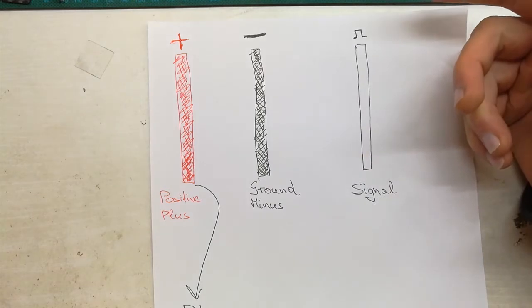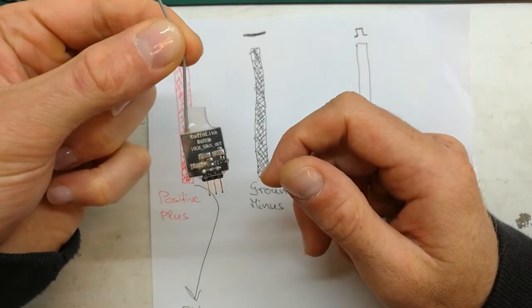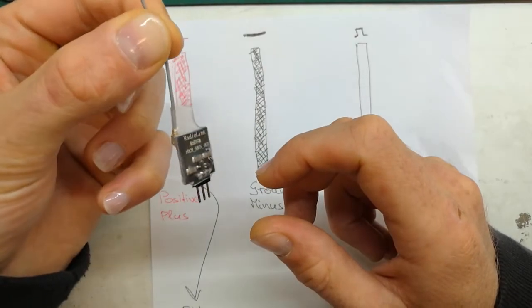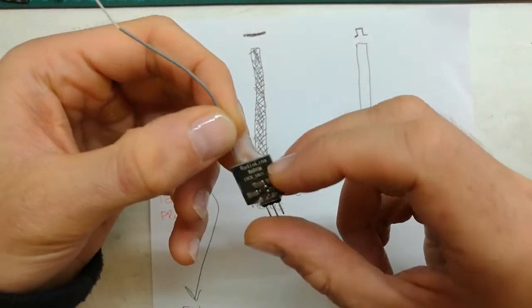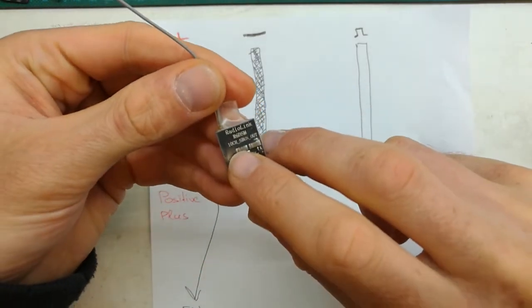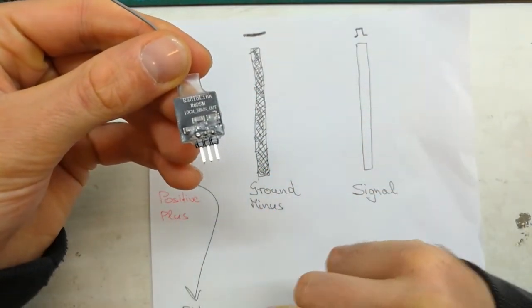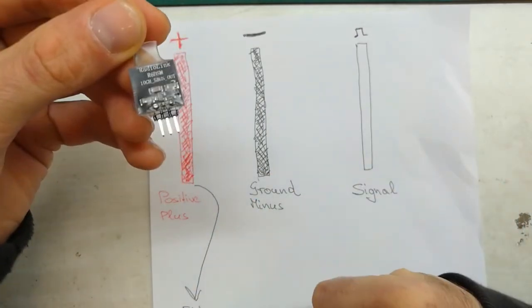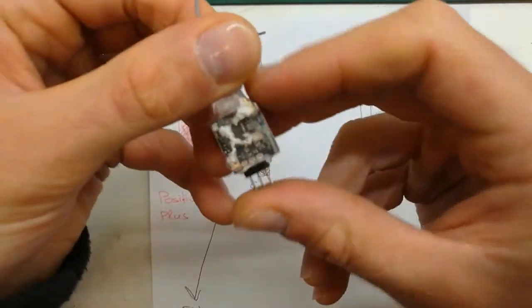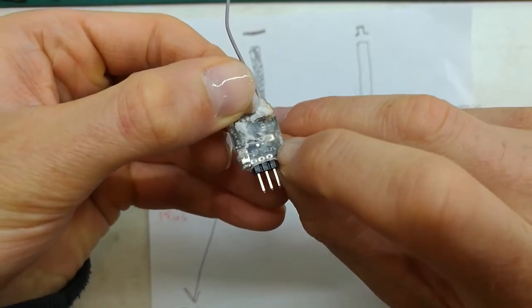As an example, I have here a RadioLink S-Bus receiver. When we get a receiver we can always try to see what's on the top and bottom because there's some useful information there. We can know from here it's a 10-channel S-Bus receiver. So we have three pins. Now the question is: where does the black wire go, red and white, where does the positive go, ground and signal?